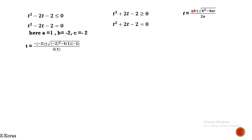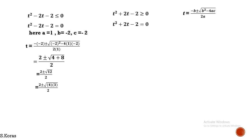Substituting: minus B is minus(−2) = 2, plus or minus root of (−2)² minus 4·A·C. Simplifying gives 2 ± √(4+8) over 2, which is 2 ± √12 over 2. Since 12 = 4×3, √12 = 2√3, so the answer becomes 2 ± 2√3 over 2, which simplifies to 1 ± √3.